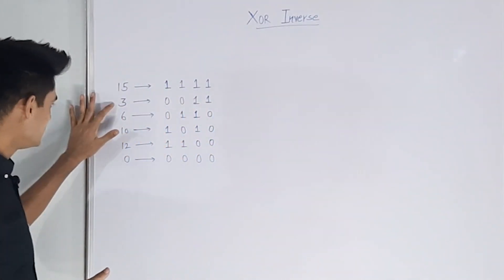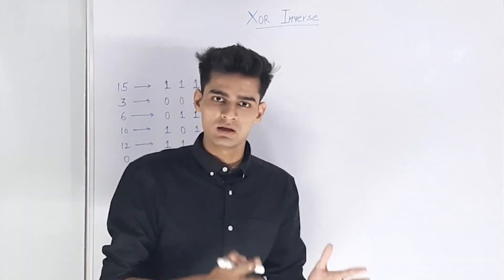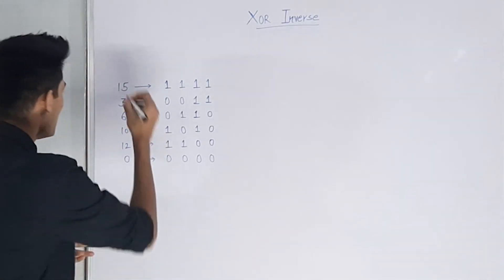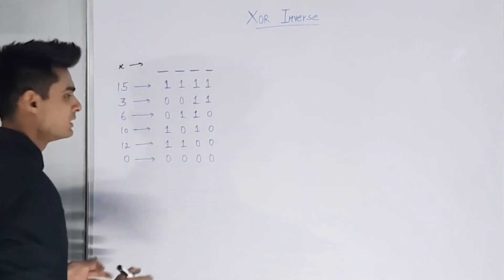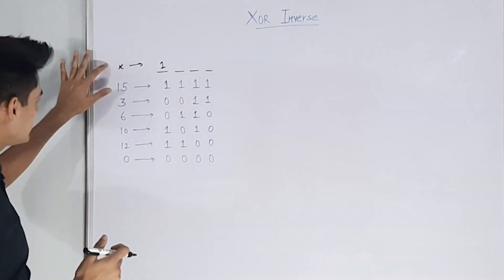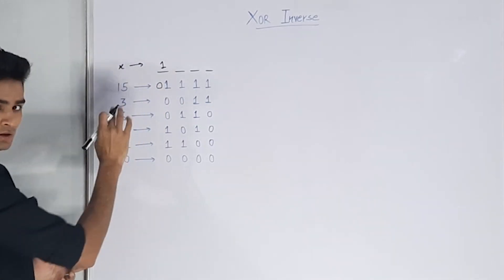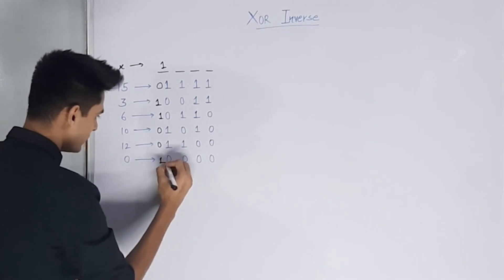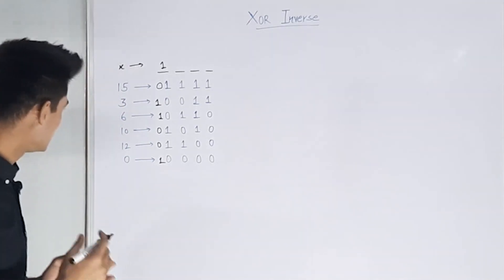Let's take an example where our initial array has six integers: 15, 3, 6, 10, 12, and 0. The idea is to start from the most significant bit and work down to the least significant bit. We have X with unknown bits. Let's first try setting this bit to 1. If this bit is 1, then XOR of X and 15 gives 0 for this bit, XOR with 3 gives 1, and similarly 1, 0, 0, and 1.